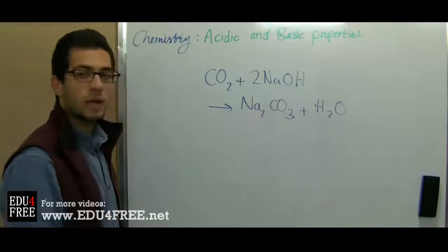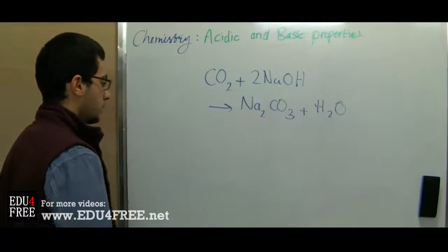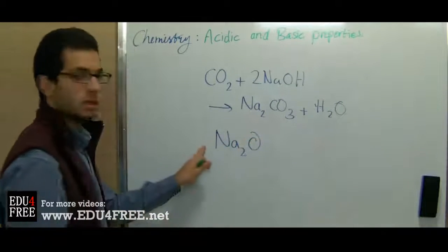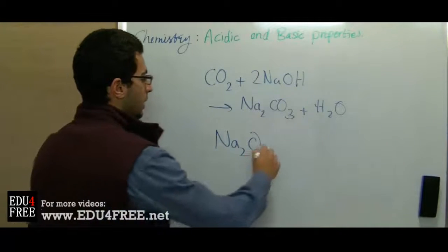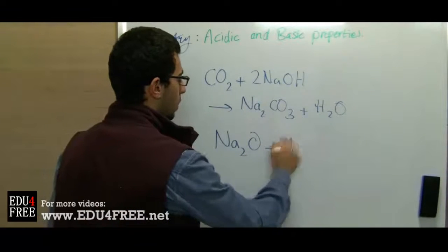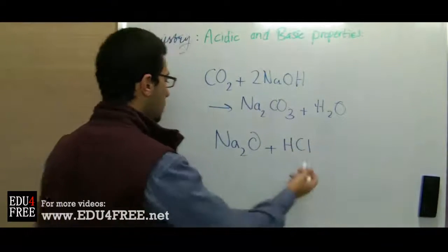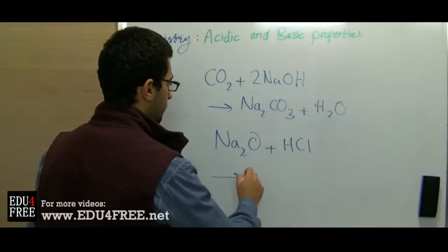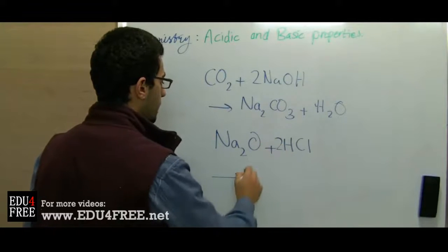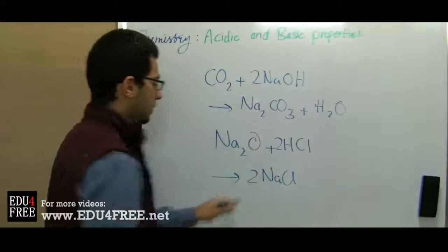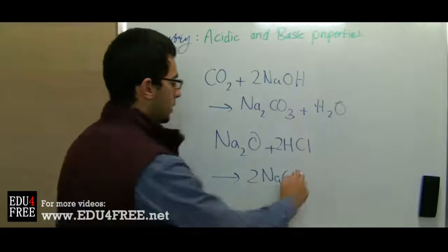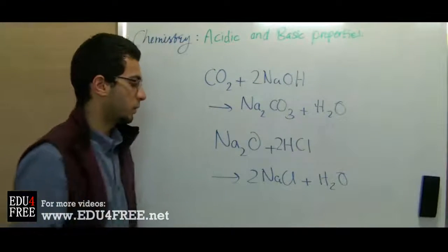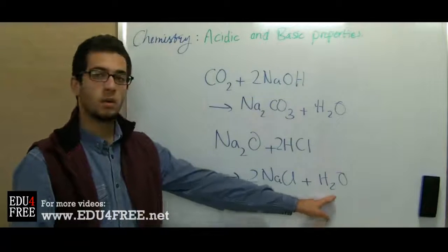On the other hand, basic oxides react with acids, also forming salts and water. For example, sodium oxide, which is a basic or metallic oxide, reacts with hydrochloric acid and gives 2 NaCl — two molecules of sodium chloride — and a water molecule. So here is a salt and water.